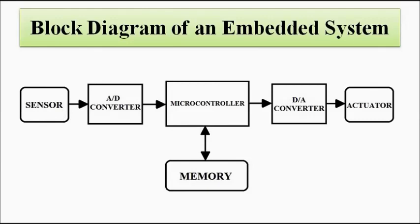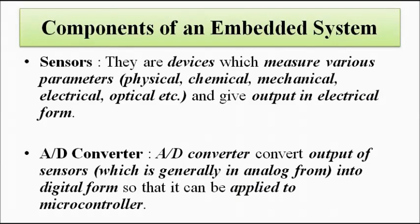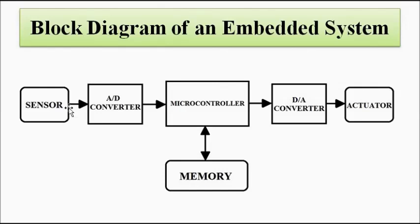First we have the sensor, which is used for measurement of various physical, chemical, mechanical, electrical, optical, and magnetic parameters, and it gives the output in electrical form. This sensor output is generally in analog form. As we have to give it to the input of the microcontroller, which responds only to logic levels — logic 1 or logic 0, binary values — we use an analog to digital converter in between, which converts it into digital form: logic high or logic low, 1 or 0.